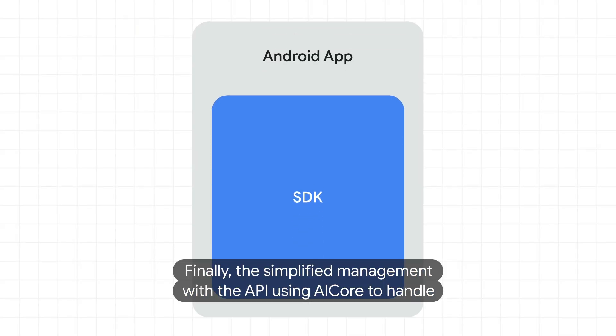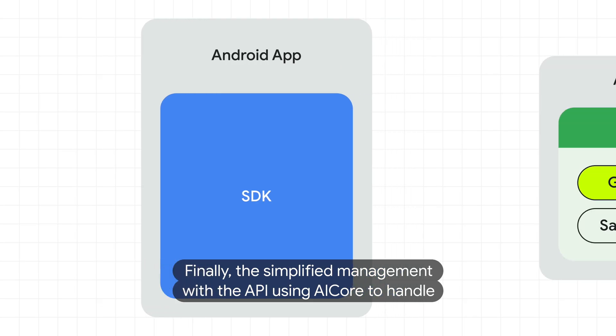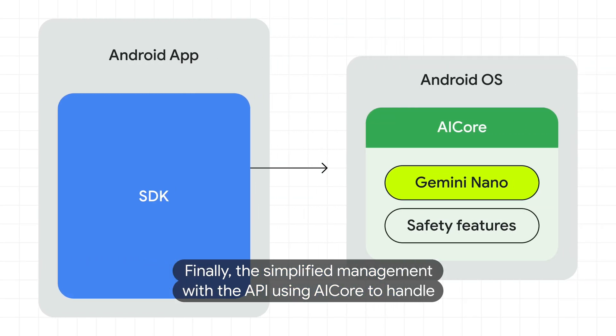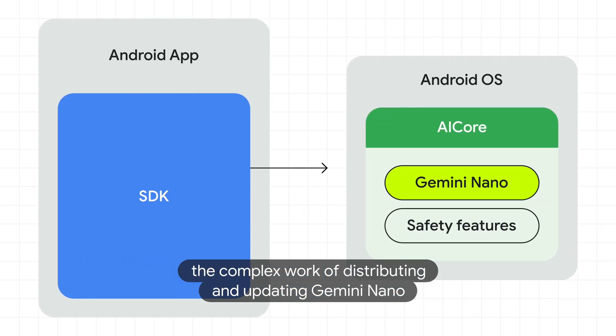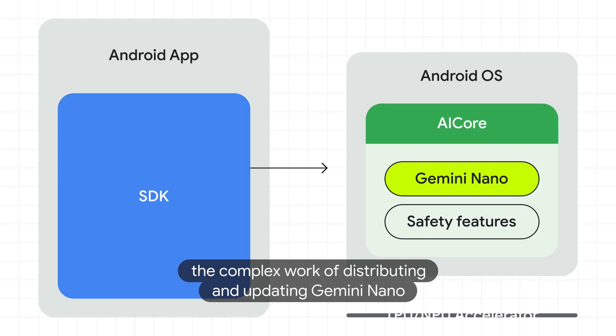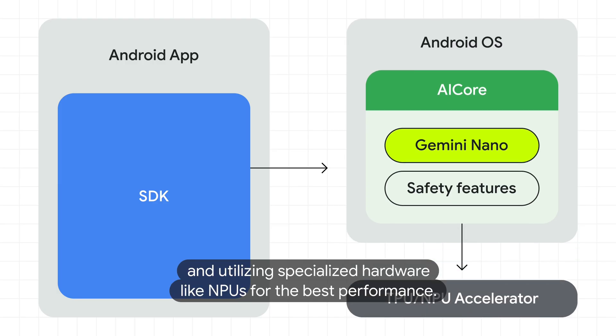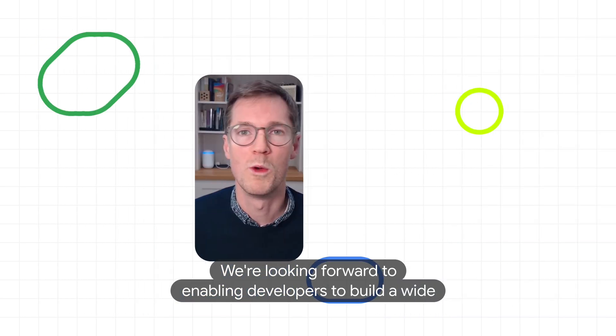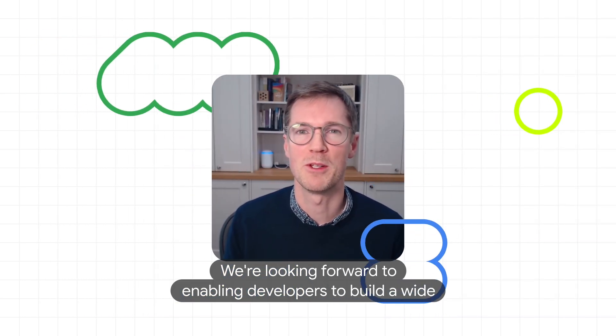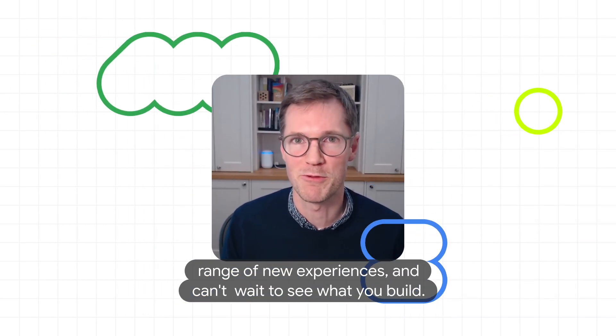Finally, there's simplified management, with the API using AI Core to handle the complex work of distributing and updating Gemini Nano, and utilizing specialized hardware like MPUs for the best performance. We're looking forward to enabling developers to build a wide range of new experiences and can't wait to see what you build.